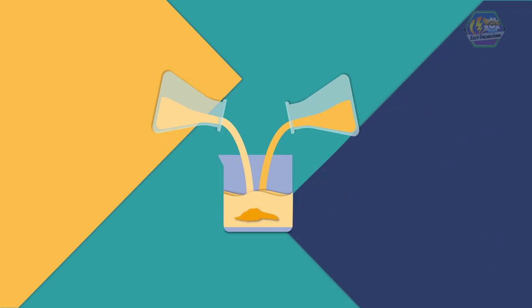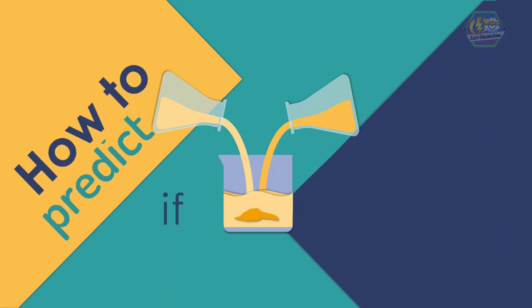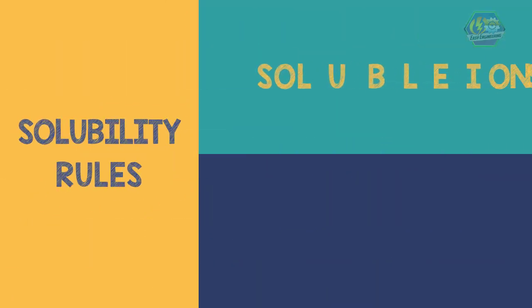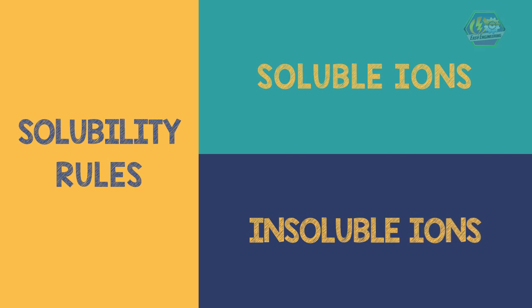In this video, you will learn how to predict if precipitation occurs when two different aqueous solutions are being mixed. But before that, we will first know the solubility rules of soluble and insoluble ionic compounds.